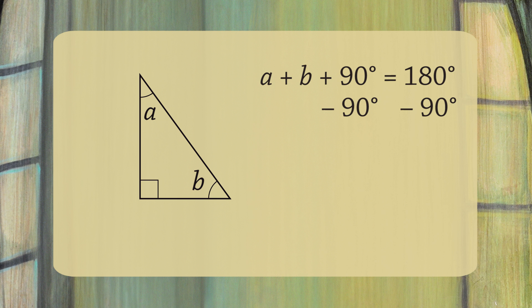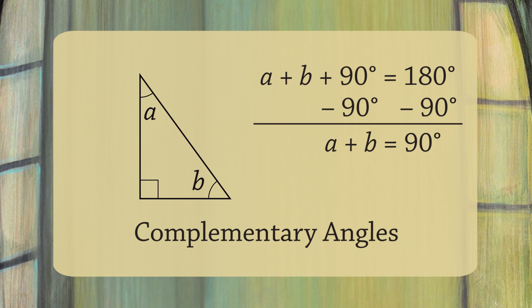If you subtract 90 degrees from both sides, you get A plus B equals 90 degrees. Because right triangles are so common in geometry and trigonometry, there's a term for two angles that add to 90 degrees: complementary angles.